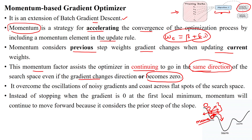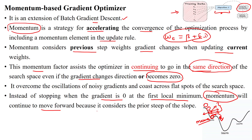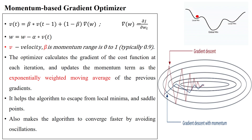In momentum-based gradient descent optimization, when the gradient is zero at any time step, the gradient gets stuck at the first local minimum. Adding the momentum factor forces the gradient forward toward the global minimum, meaning towards reaching the minimum error for the model.